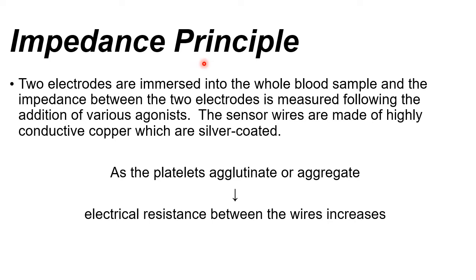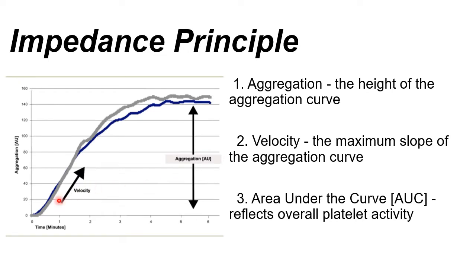For the impedance principle, it can sense platelet activity. More activity produces a larger electrical resistance. When the agonist is added, differences in electrical resistance begin — more agglutination produces more resistance. On the impedance graph, the x-axis is time and the y-axis is the amount of platelet aggregation activity. Note that for light absorbance the curve goes downward, while for impedance the curve goes upward.